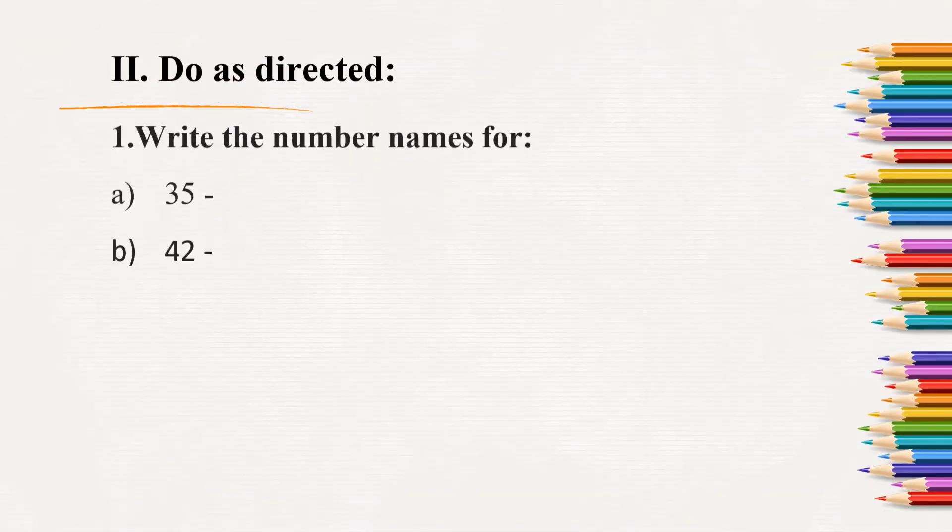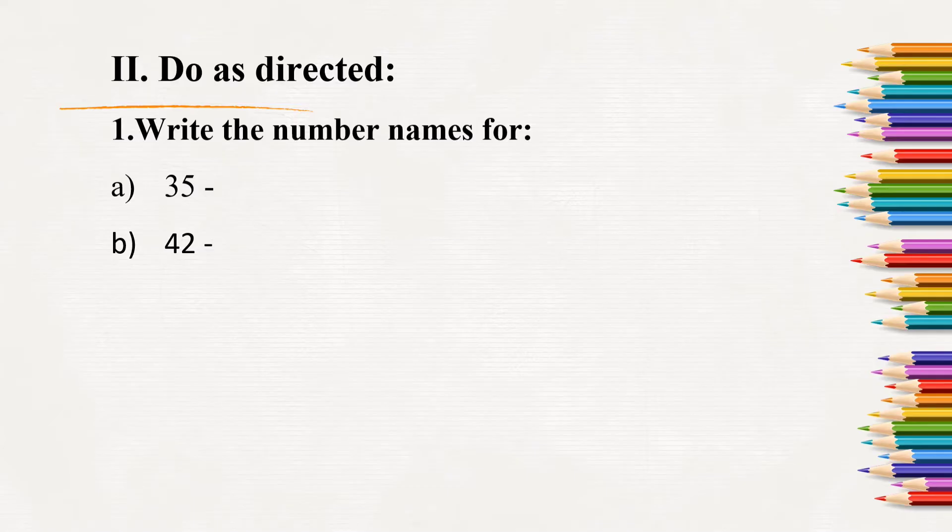Next, do as directed. First question: write the number names for. What is this number? 35. So how will we write 35? T-H-I-R-T-Y F-I-V-E. Thirty-five. Next is 42. What is the spelling of 40? F-O-R-T-Y. You should not write F-O-U-R-T-Y. It's F-O-R-T-Y T-W-O. Forty-two.